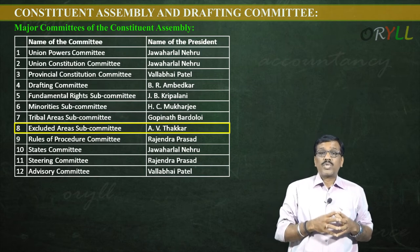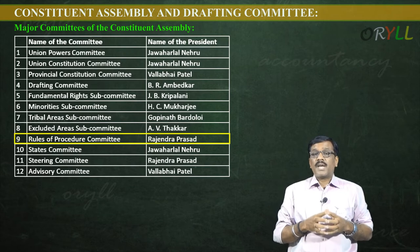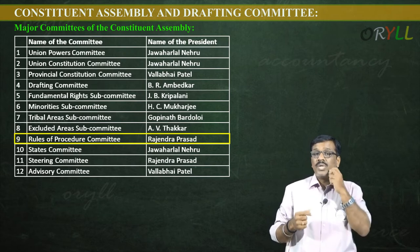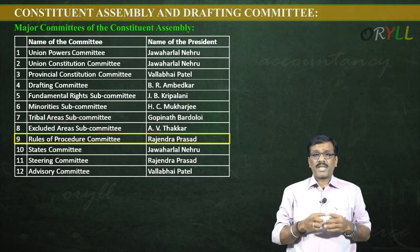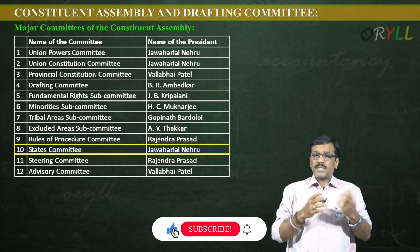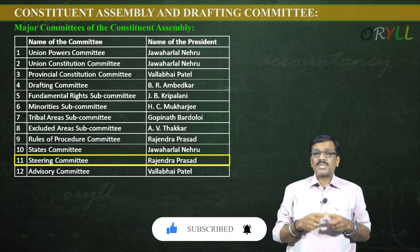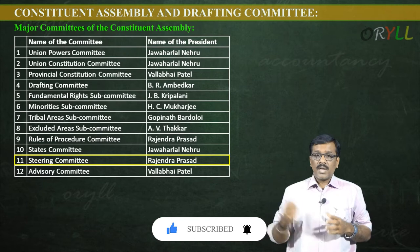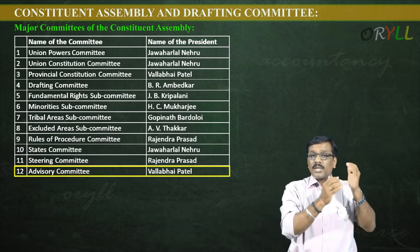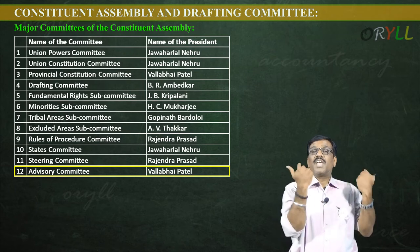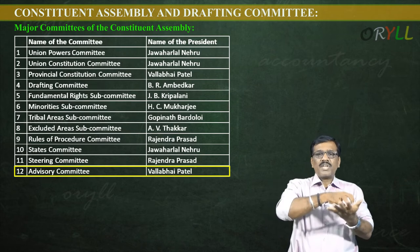The Rules of Procedure Committee was headed by Rajendra Prasad, who was also the Chairman of the Constituent Assembly. The States Committee was headed by Jawaharlal Nehru, the Steering Committee by Rajendra Prasad, and the Advisory Committee by Vallabhbhai Patel. Every committee worked within its own domain.